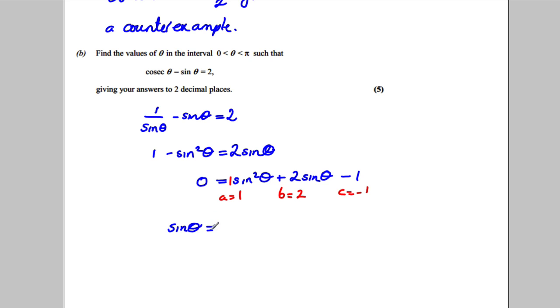b is equal to two, and c is equal to negative one. So sin θ is going to equal -2 ± √(b² - 4ac). So four, subtract 4ac. So 4 × 1 × -1, all divided by 2a, which would be two.